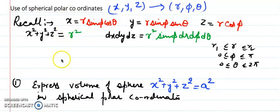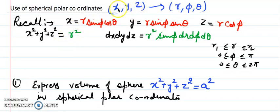Now let's share some questions on spherical polar coordinates. First, let us recall the substitutions. We have to convert x, y, z into new coordinates r, theta, phi — two angles and one radius.